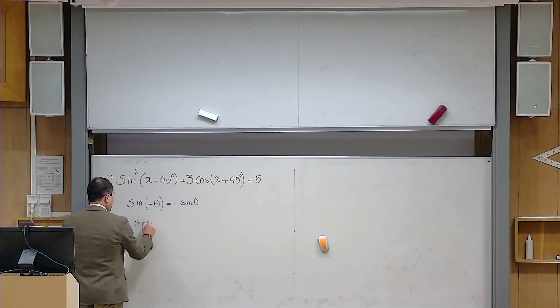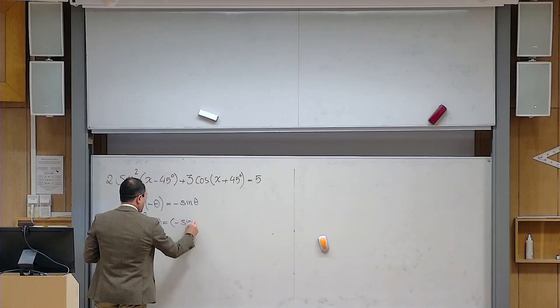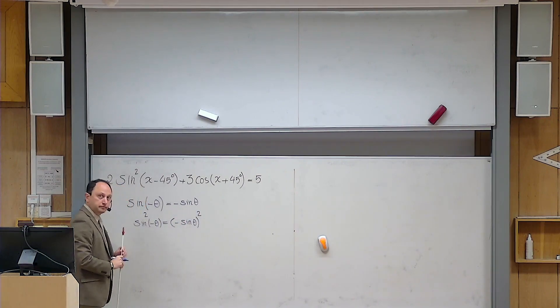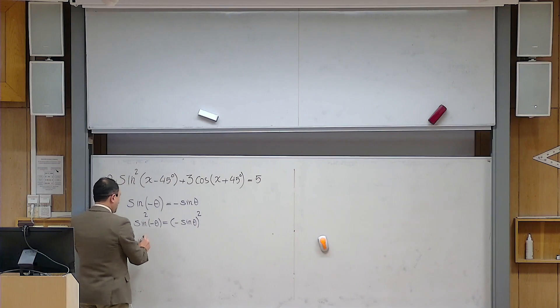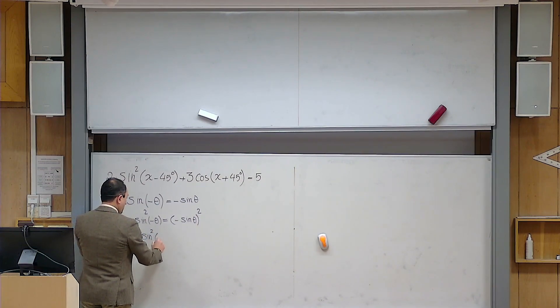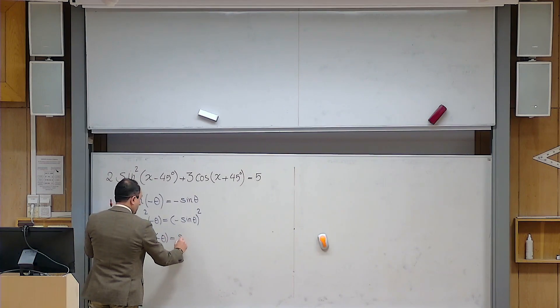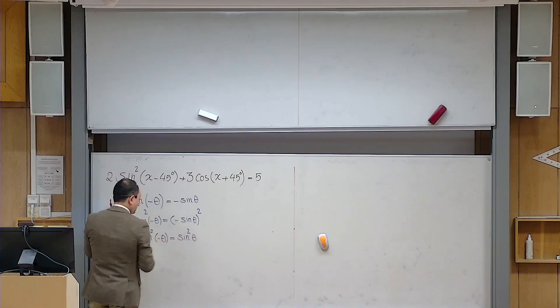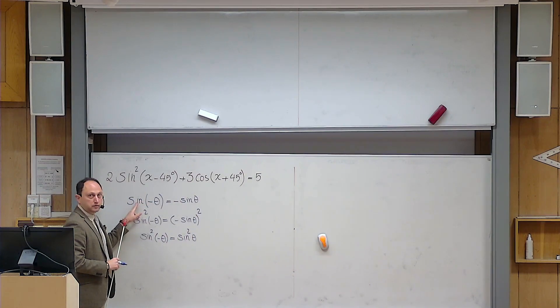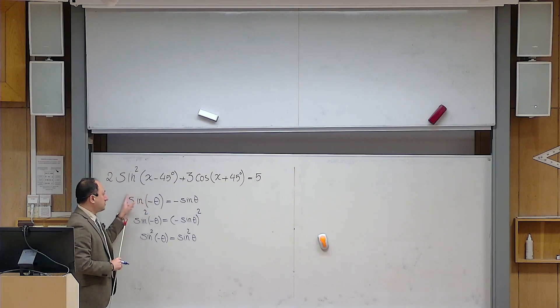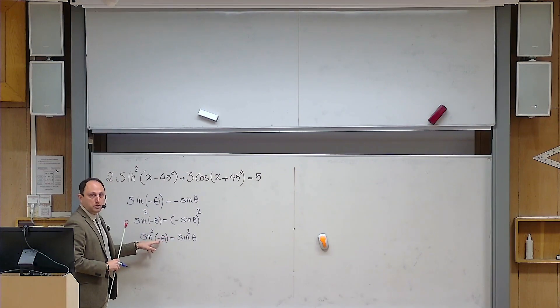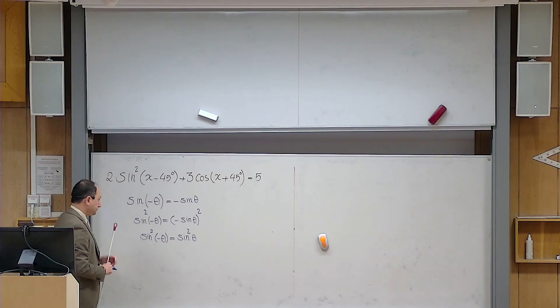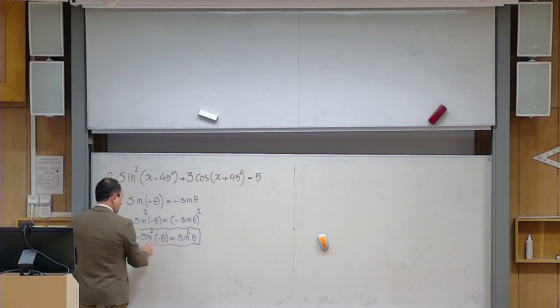But then let me raise both of these to power 2. So it becomes sine of minus theta to power 2 equals minus sine theta totally to power 2. But this minus sign will be gone because of this even power 2. So it becomes sine to the power of 2 of minus theta equals sine of theta squared. So even though I have a negative sign in front of sine, if I have an even power, this minus sign is actually eliminated because of that even power. This is something I need to solve this problem.